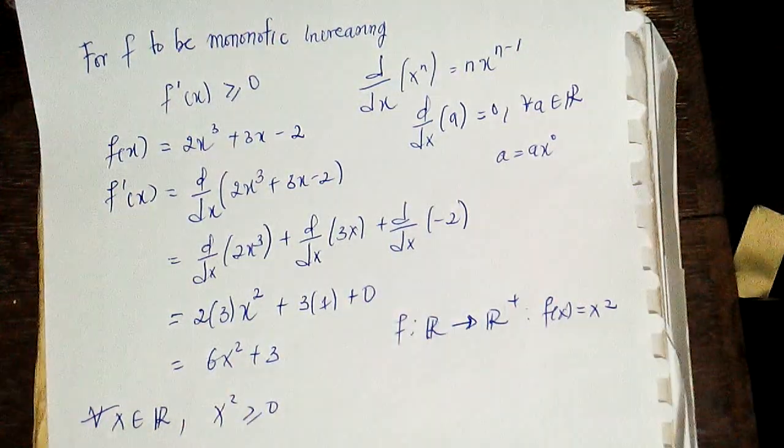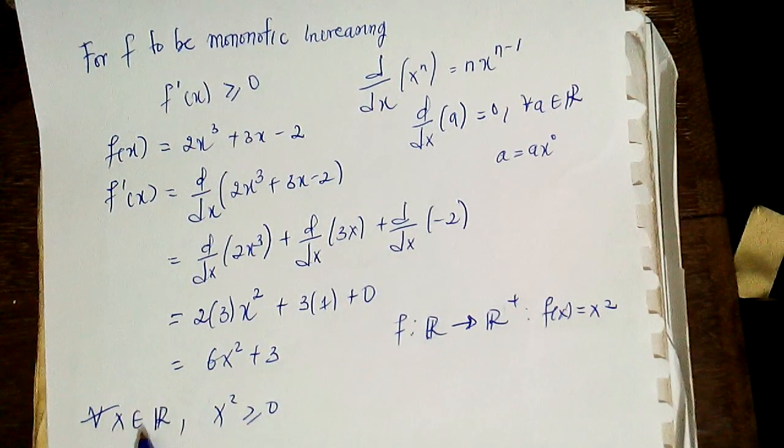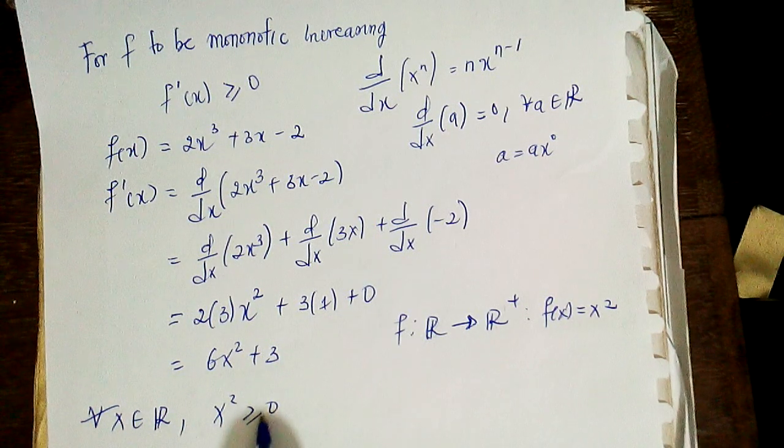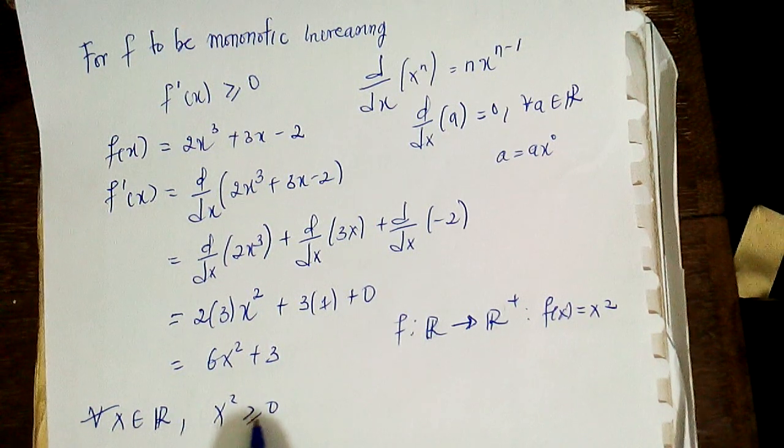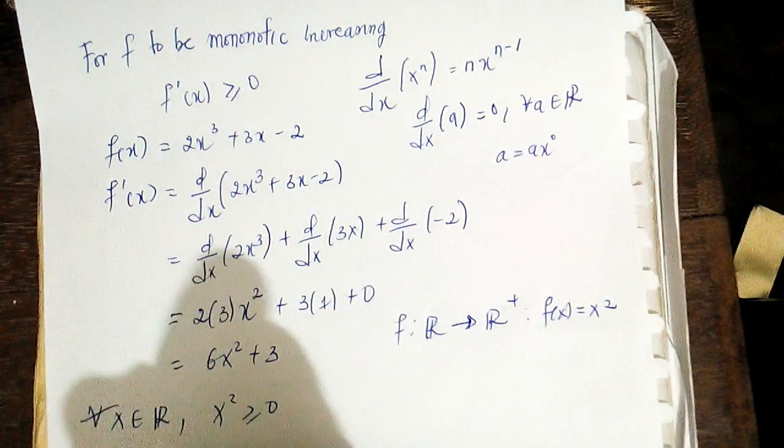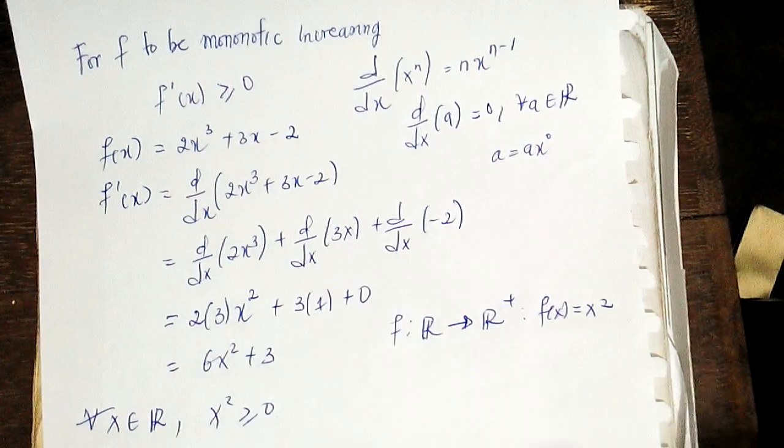If I multiply both sides by 6, it means 6x² ≥ 6·0 = 0. Now I need to add 3 to both sides.